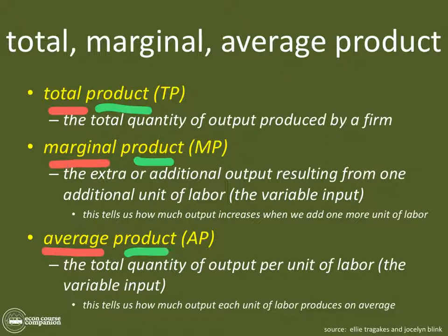What's total product? It's pretty simple — it's the total quantity of output produced by a firm. Product is the thing they make: mate cups, coffee cups, cell phones, keys, paper — that's what they make. How many do they make? Well, that's the total.